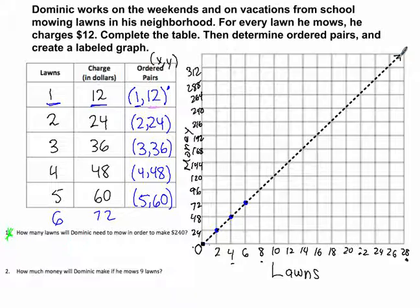Without doing any mathematical calculations, this graph has so much valuable information. We not only know these 3 points that are plotted, but now we know for 8 lawns, $96. 12 lawns, $144. 14 lawns, $168. And we also know everything in between would be halfway points.